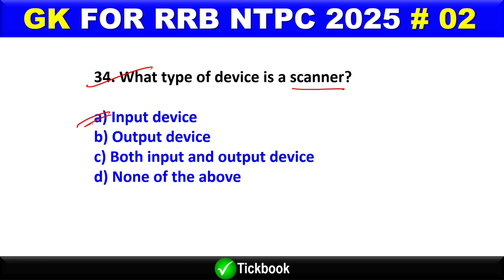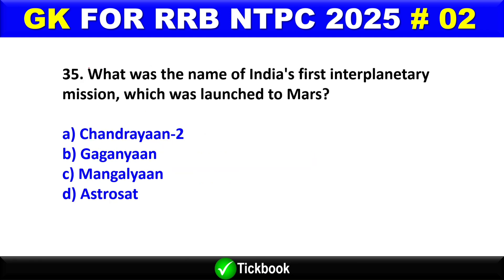Question number 34: Which type of device is a scanner? Option A is the right answer — an input device. Question number 35: What is the name of India's first interplanetary mission, which was launched to Mars? Option C is the right answer — Mangalyaan.